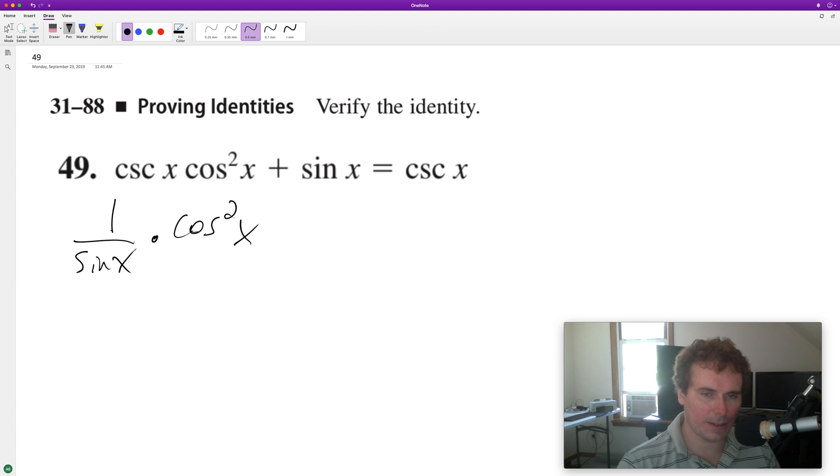Times cos²x plus sin x. All right, so a common denominator here will be sin x. We end up with cos²x plus sin²x because I need to get a sin x under this. To do that, I need to multiply on top by sin x, and then we have sin x on the bottom.